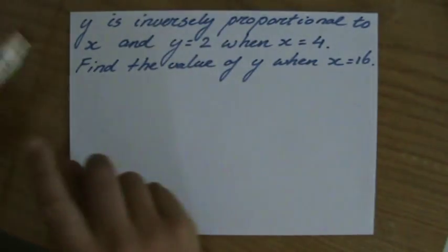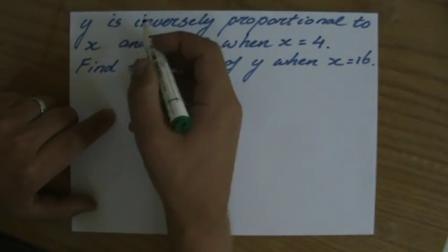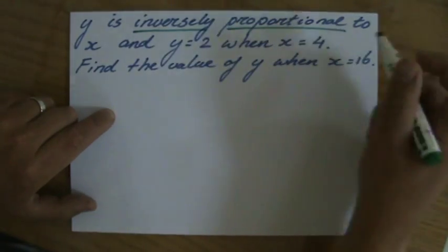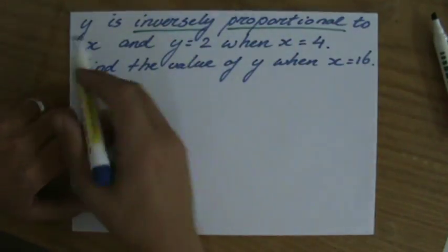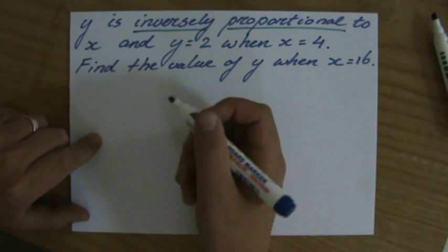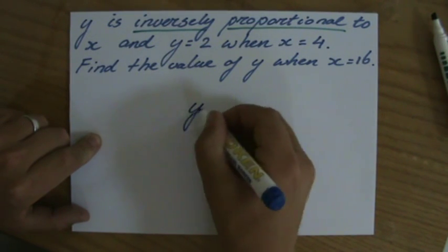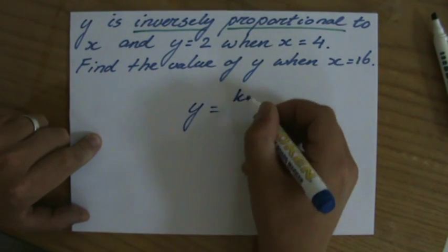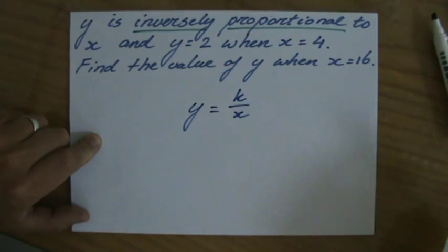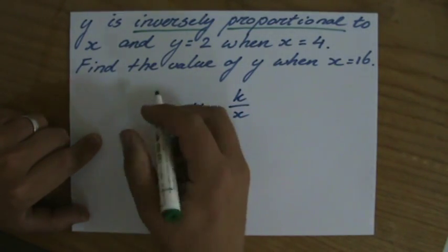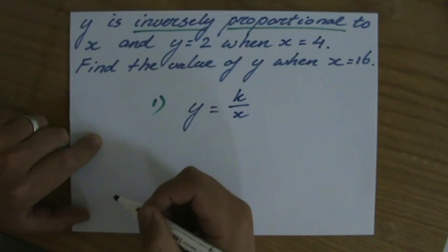A lot of information, important information, is inversely proportional. So, y is inversely proportional to x, so I can write down that y equals a constant divided by x. Because it's inverse proportion, that could be my first step.